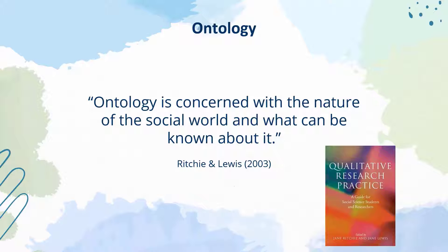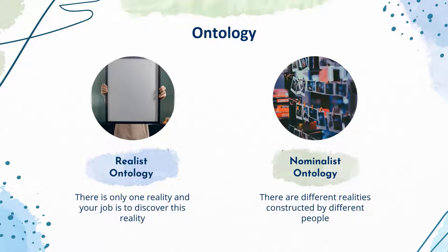The first key term is ontology. Ontology is concerned with the nature of the social world and what can be known about it. Within ontology we can consider there to be two poles at either end. On one side we have a realist ontology, which believes and posits that there is only one reality, and our job as a researcher is to discover this reality.